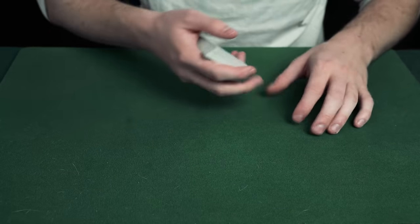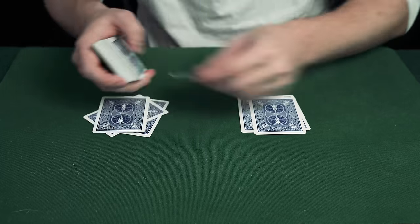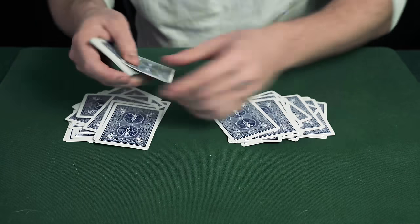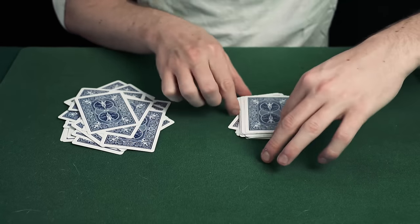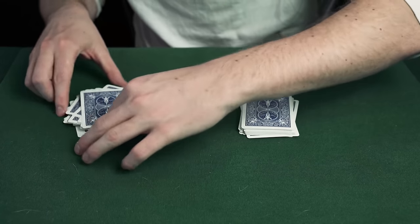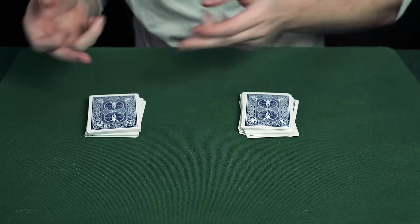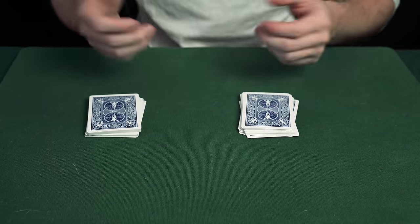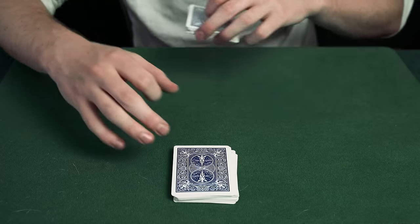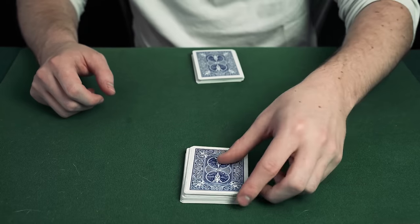You explain to the spectator that they've shuffled cards they've mixed them up everything is fair now you're going to split the cards into two separate piles. You split the cards into two piles you square them up and remember these are the cards the spectator themselves have shuffled up so had they shuffled the cards differently some of these cards would be in this pile and some of these cards would be in this pile they can choose whichever pile they like so they just take this one you take this one and you explain how this sort of game works.